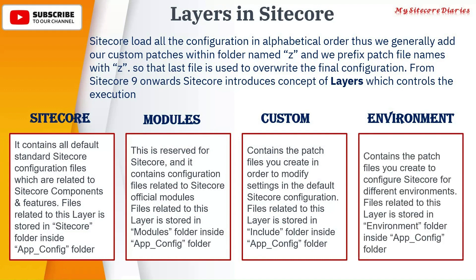Then we have the Environment layer. It contains the patch files you create to configure Sitecore for different environments. You may have multiple environments — non-prod environments like dev, stage, and UAT, as well as a prod environment. Environment-specific configuration goes into the environment folder. You can have different configuration for dev, different for stage, and different for UAT. The environment folder is stored inside app_config. So in app_config you have: Sitecore, Modules, Include, and Environment folders — these are the four layers.